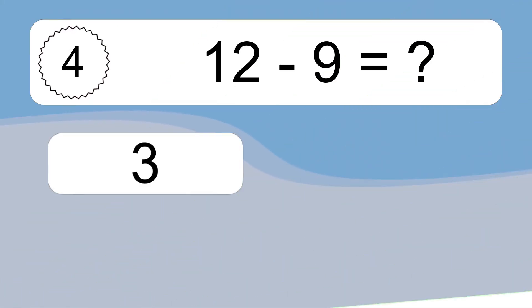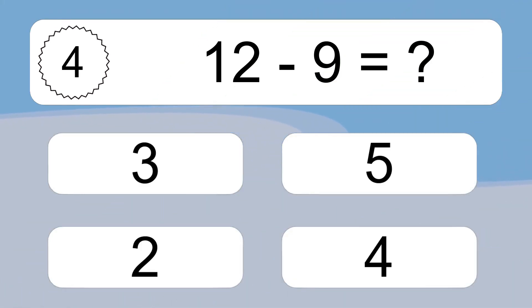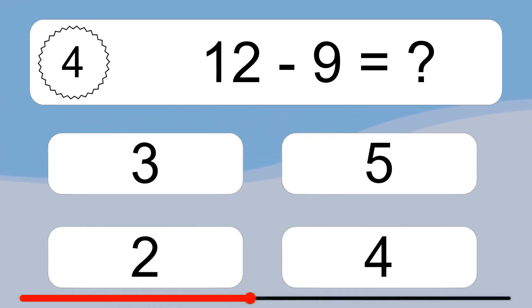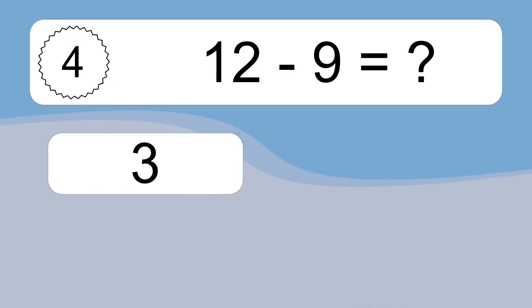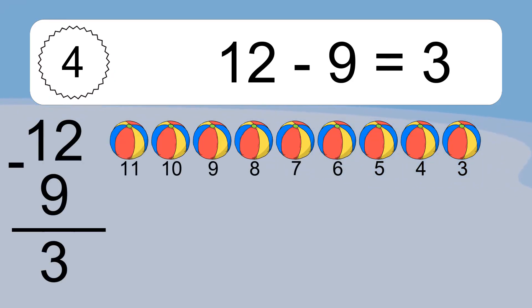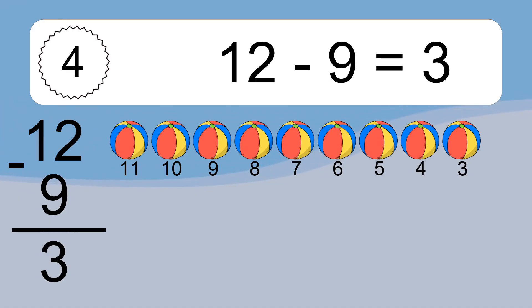12 minus 9 equals what? 12 minus 9 equals 3. Let's count it: 11, 10, 9, 8, 7, 6, 5, 4, 3.